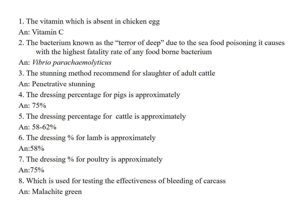Third question: the stunning method recommended for slaughter of adult cattle is penetrative stunning. The dressing percentage for pigs is approximately 75%.